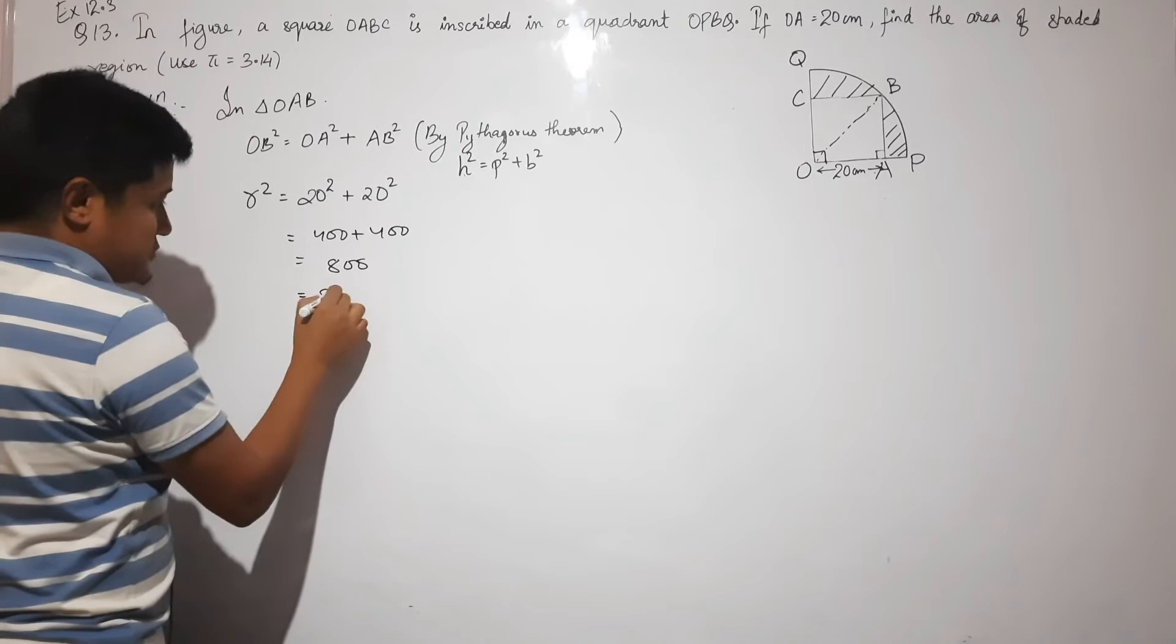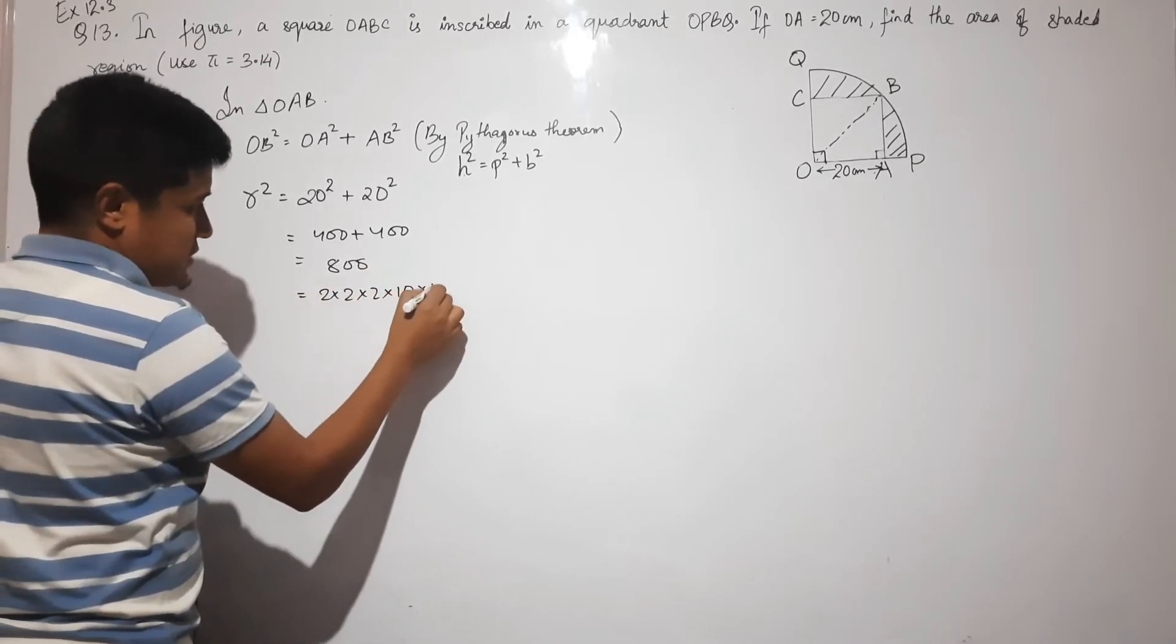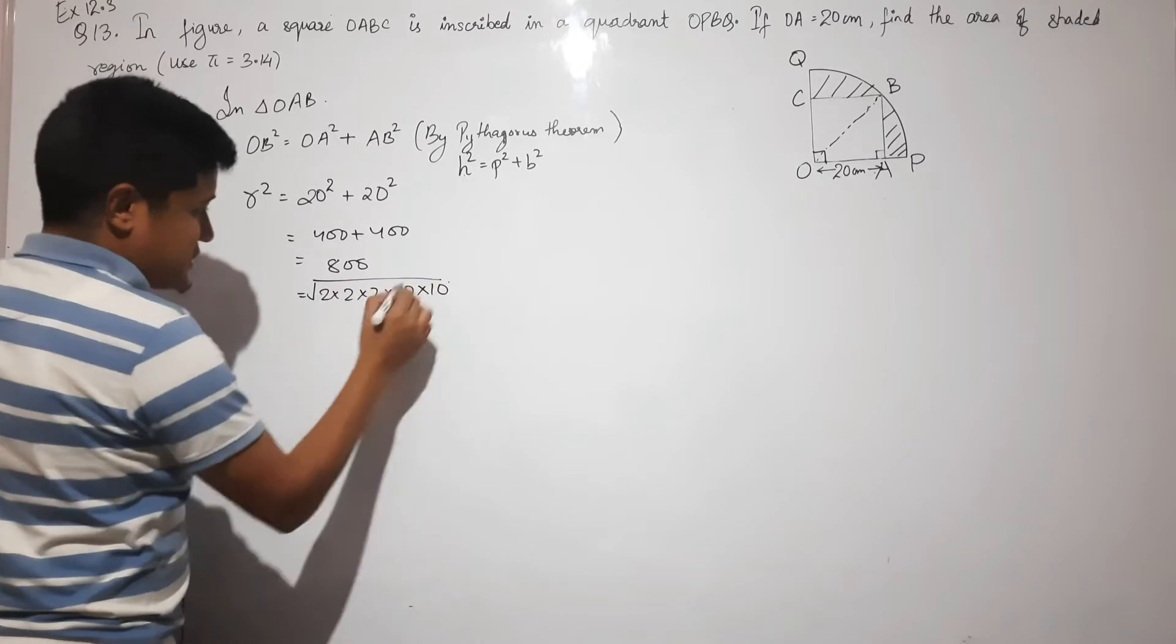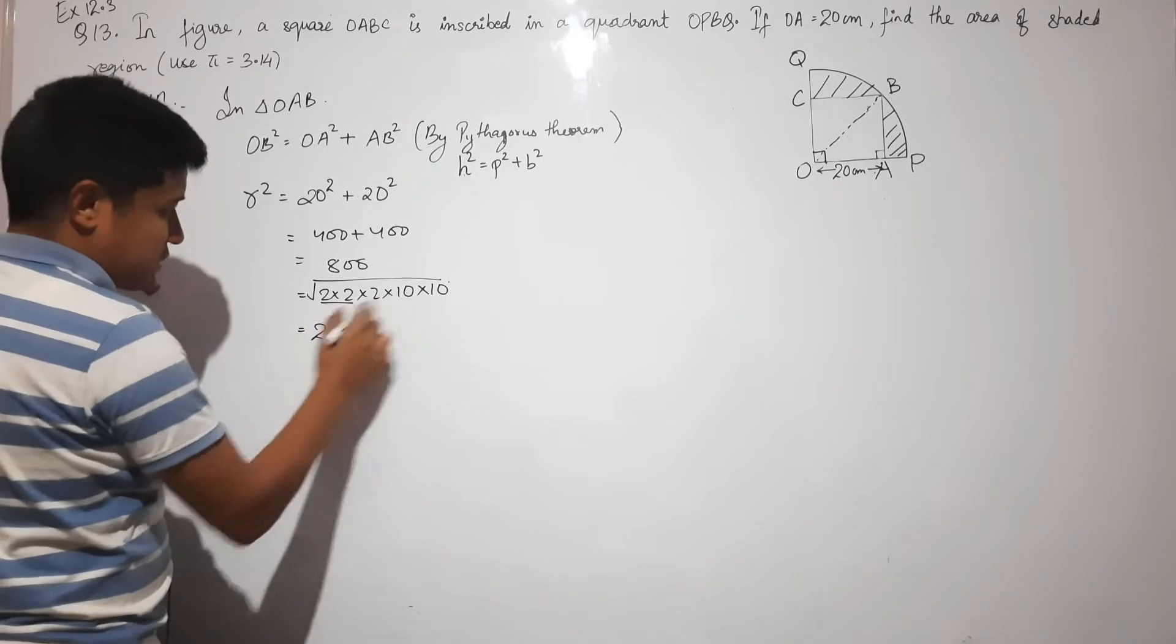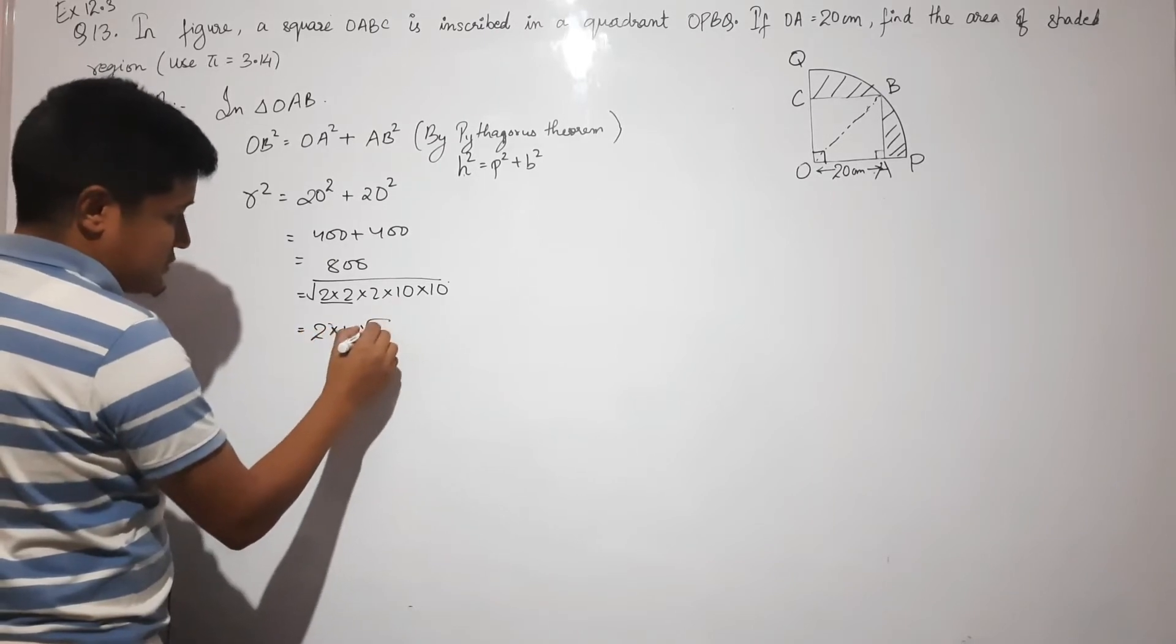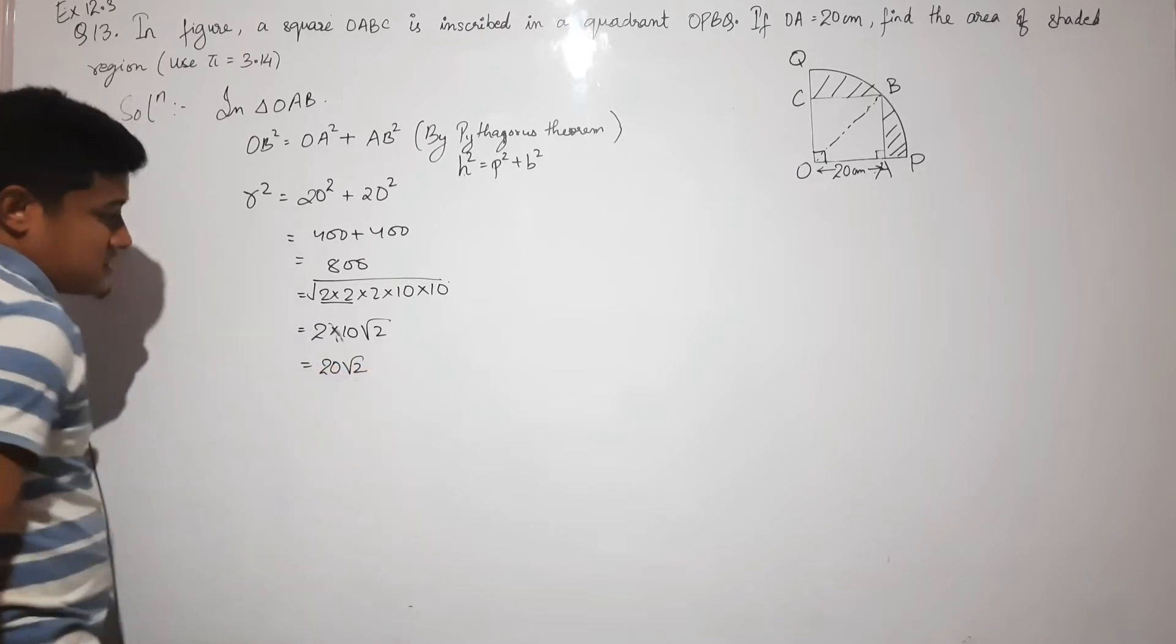800 can be written as 2 × 400. Taking the square root, we get √800 = 20√2, which is your radius.